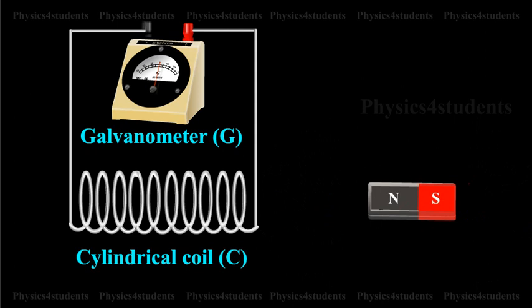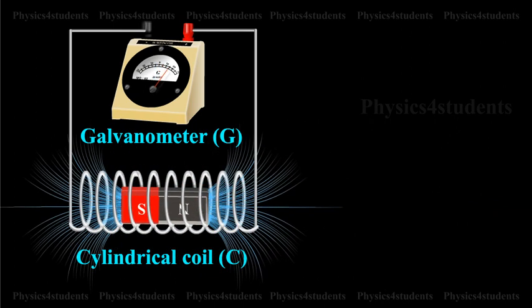However, on reversing the magnet, that is the south pole pointing towards the coil, same results are obtained, but current flows in the opposite direction.